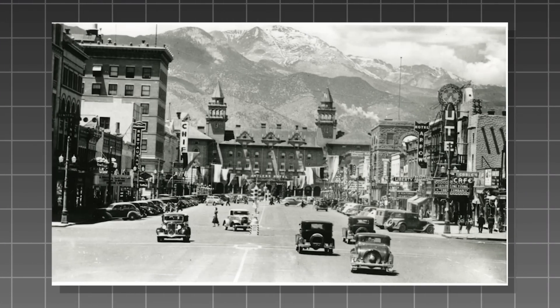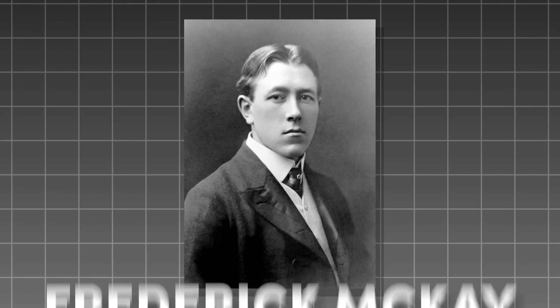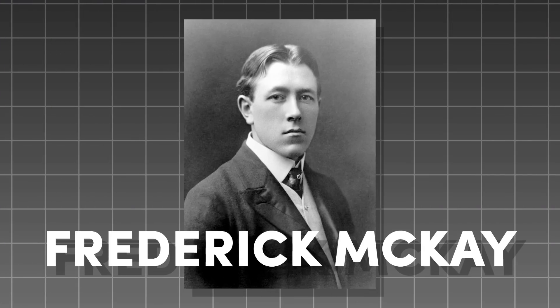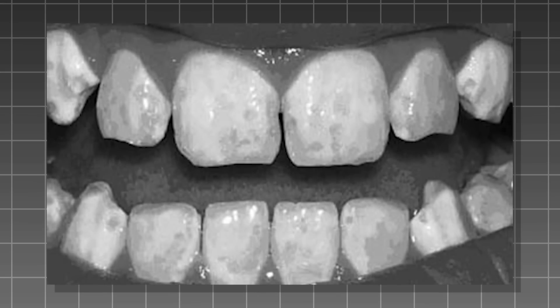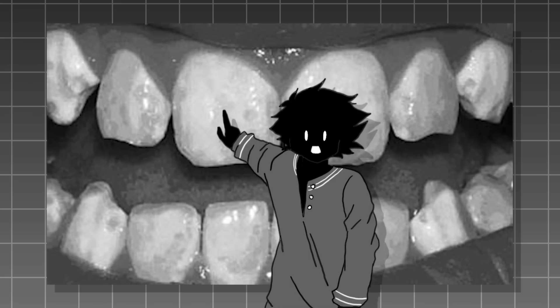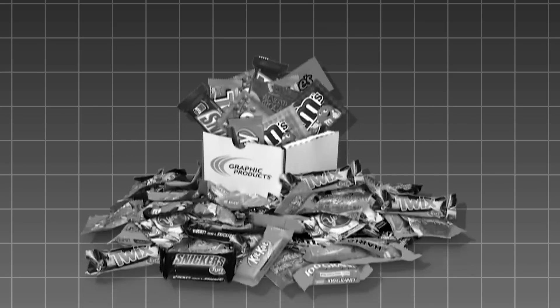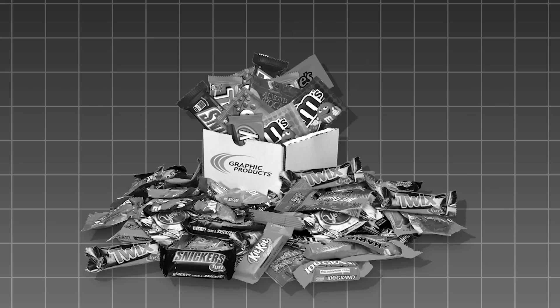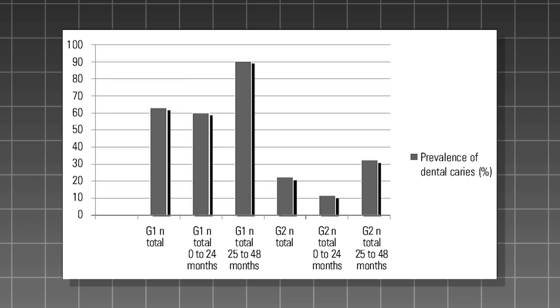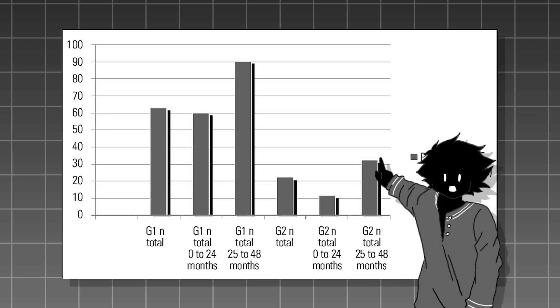In Colorado Springs, Colorado, a young dentist named Frederick McKay discovered something unique about this town. A lot of the children he worked on had this strange brown staining on their teeth. This type of staining would look like if you had eaten dark chocolate. However, he soon discovered that the teeth were highly resistant to tooth decay. Despite our high sugar diet nowadays, childhood tooth decay was a lot more of a problem back then. In fact, it was such a problem that even children from wealthy backgrounds were affected.